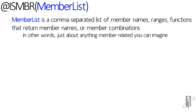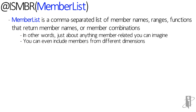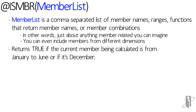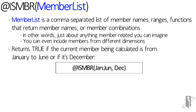Basically, anything member-related that you possibly want to check for, including members from different dimensions, you can use with this format of the isMember function. So let's say I wanted true to come back if I'm calculating January, February, March, April, May, June, or randomly the month of December.